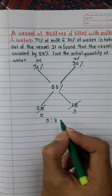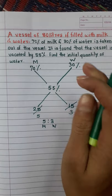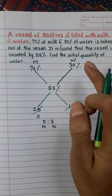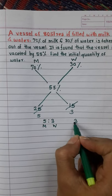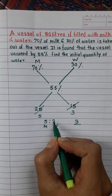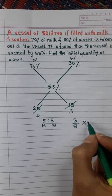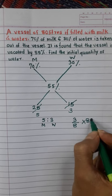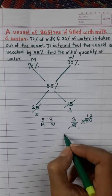5:3 is the ratio of milk to water. We want to find the initial quantity of water. Water is 3 out of 5 plus 3 equals 8, multiplied by the total 80 liters. Therefore,